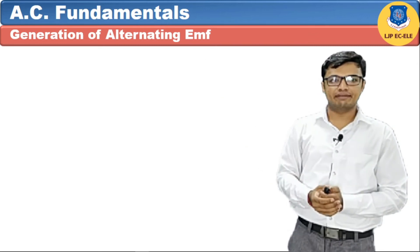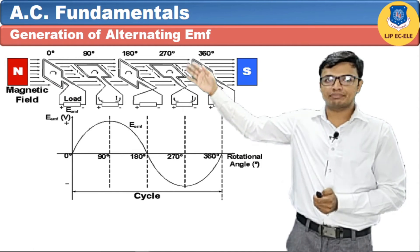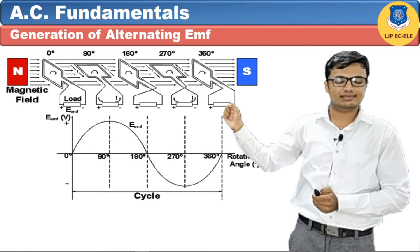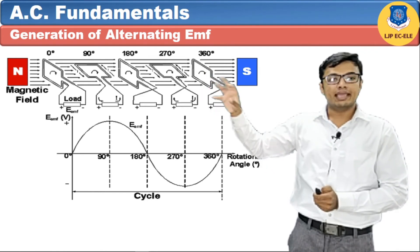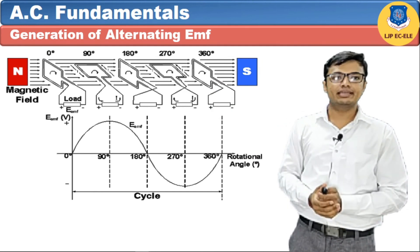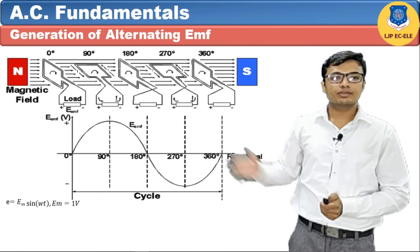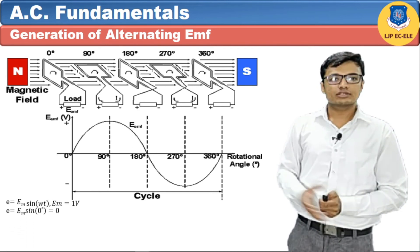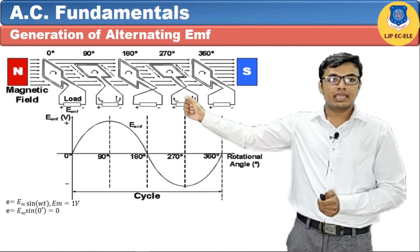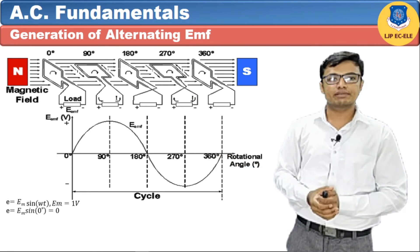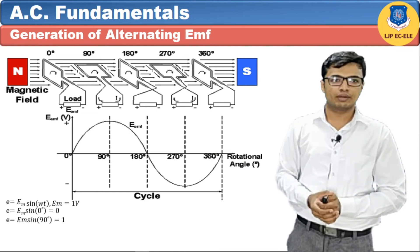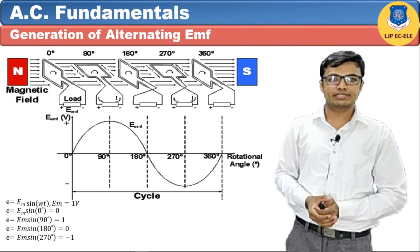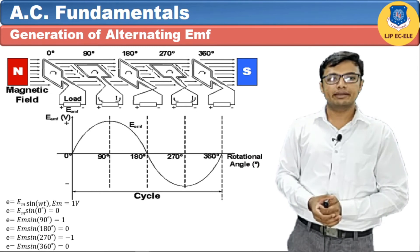Let's understand how we can generate alternating EMF sine wave in an alternator. We have two magnetic poles — N and S — with magnetic flux lines going from N pole to S pole. Inside is a conducting loop connected with a load resistance. As we rotate the loop clockwise, it sequentially makes an angle with the magnetic field. The EMF equation is: E = Em × sin(ωt), where Em is the maximum value and ωt is the angle in radians. At 0°, EMF = 0 V; at 90°, EMF = Em (maximum); at 180°, EMF = 0 V; at 270°, EMF = −Em (negative maximum); at 360°, EMF = 0 V again.